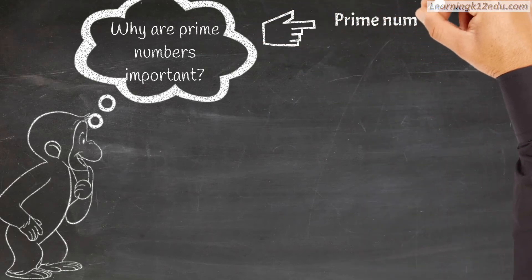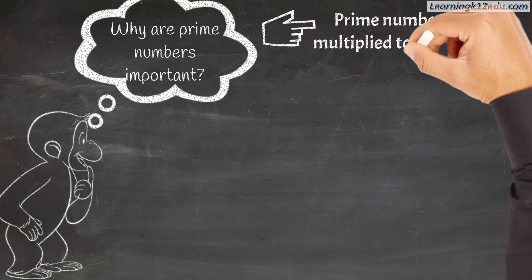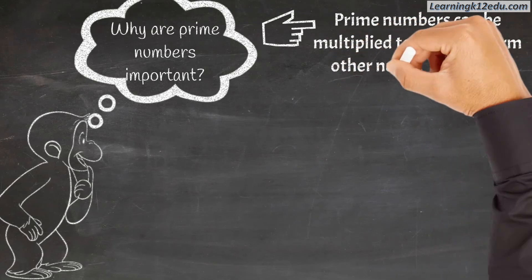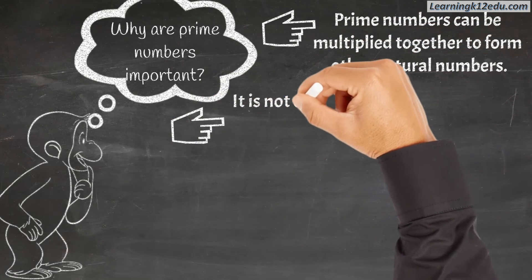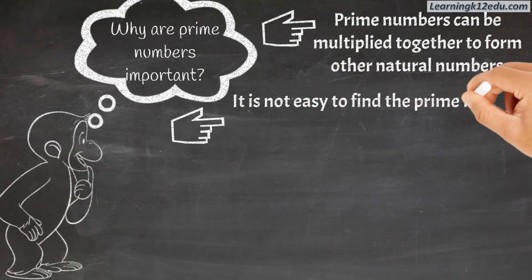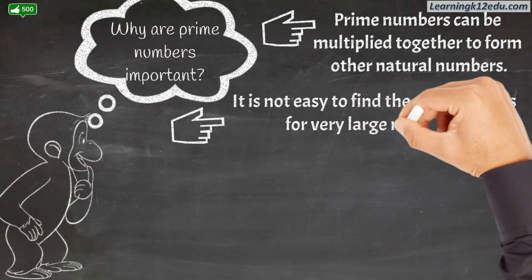Prime numbers can be multiplied together to form other natural numbers. It's not easy to find the prime factors of very large numbers.